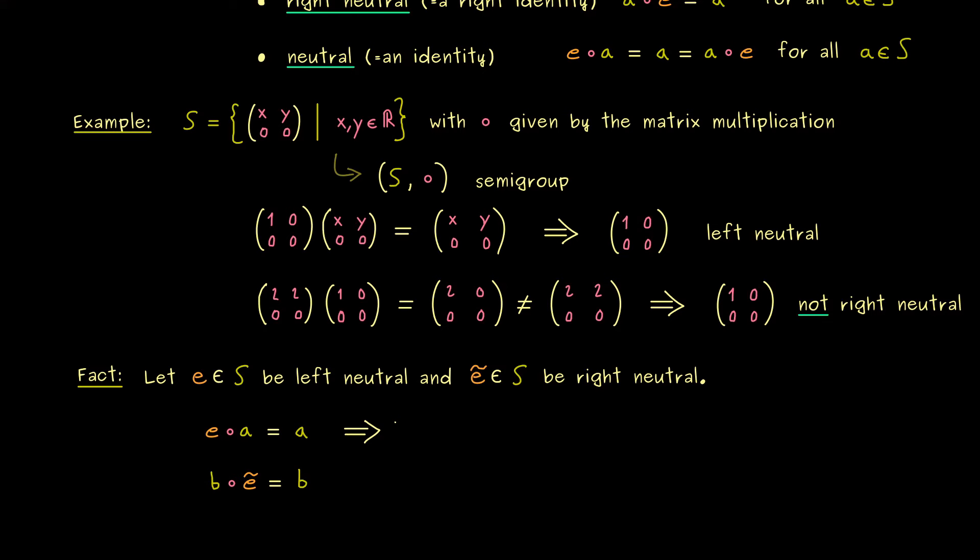So we get E circle E tilde is equal to E tilde again. Moreover a similar thing we can do with the second equation because instead of B we can write E. Hence there we get E circle E tilde is equal to E.